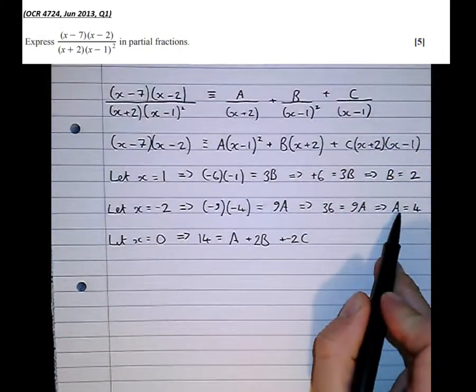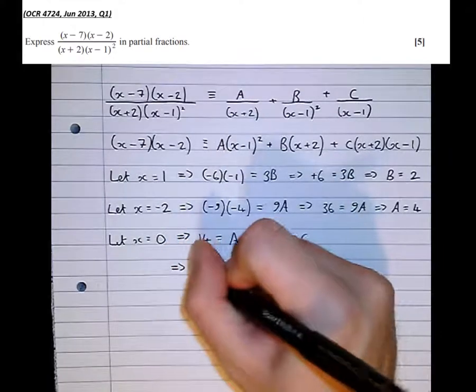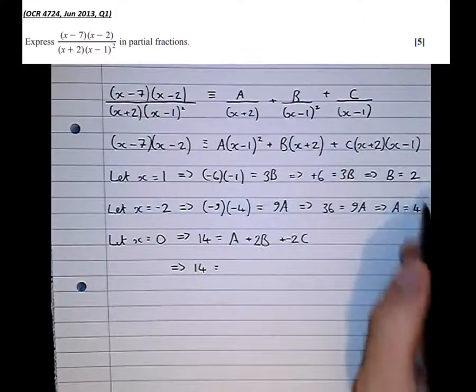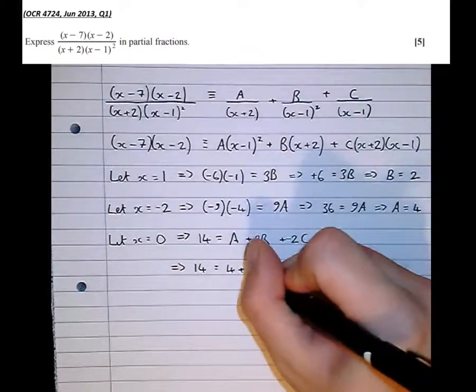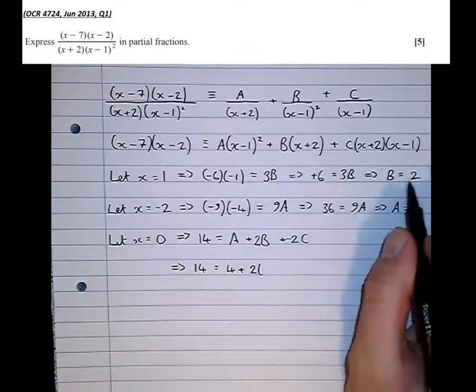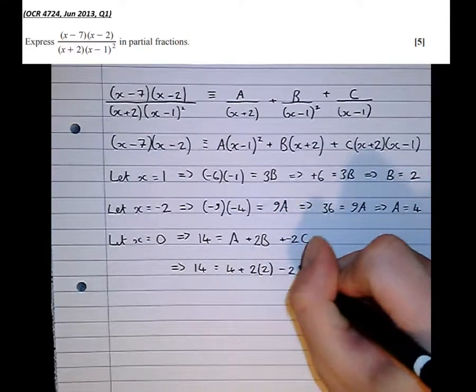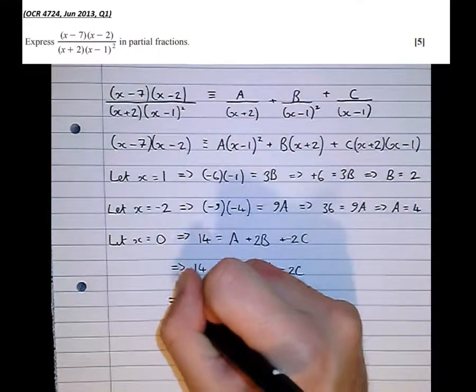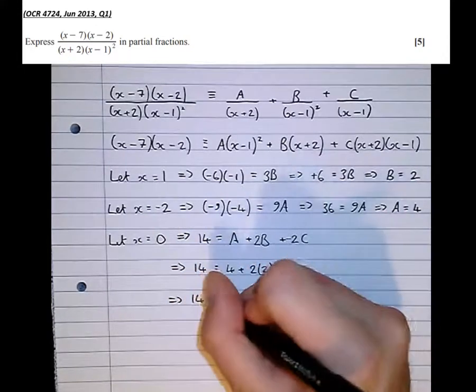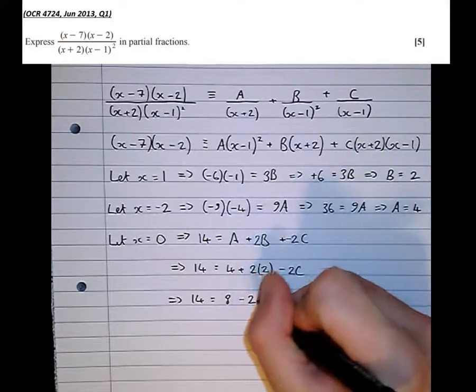But we also have values of a and b, which makes this easier to do now. 14 equals, well, we know a is 4. 4 plus 2 lots of b, 2 lots of 2, minus 2c. Which means that 14 equals 4 plus 4 is 8 minus 2c.